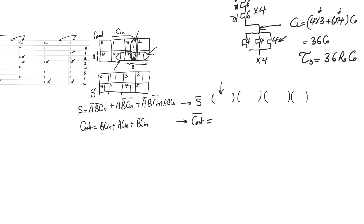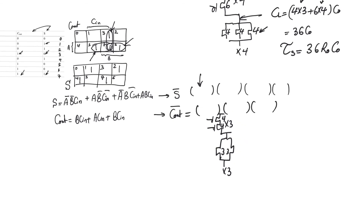For the carry out expression, Cout bar consists of 3 products of sum terms, each with 2 variables. The pull-down network has blocks of 2 transistors in parallel repeated 3 times to ground, and the pull-up has 3 branches each with 2 PMOS transistors to VDD. Sizing PMOSs at 4 and NMOSs at 3 gives resistance equal to the unit inverter. The load capacitance is 3×2 + 4×3 = 6 + 12 = 18 C0, giving tau Cout equals 18 R0C0.